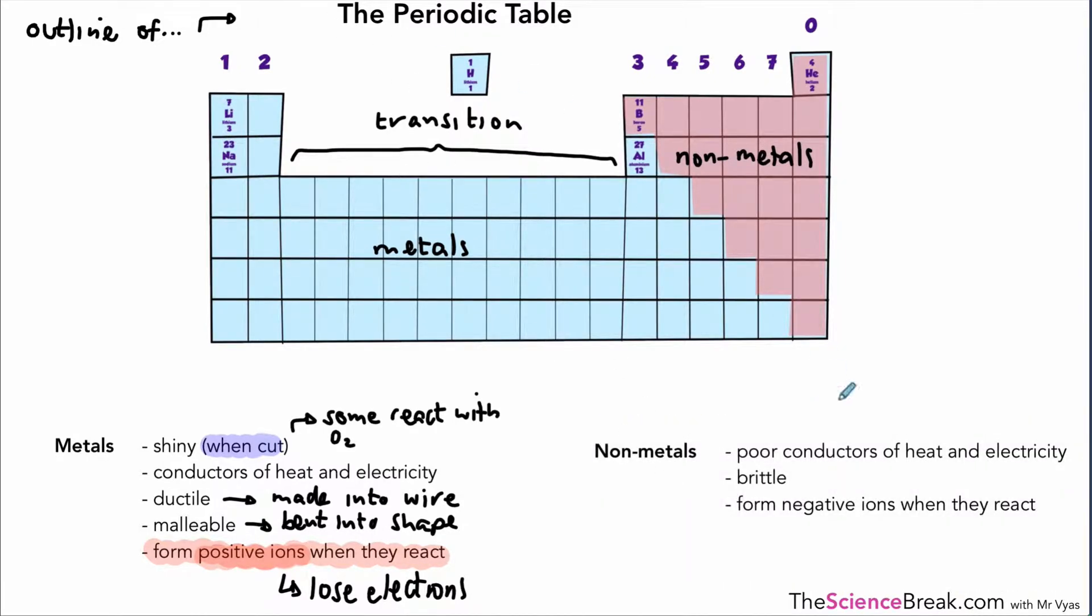In terms of our non-metals, they are poor conductors of heat and electricity. They are often brittle, which means they can crack or break easily. That is, of course, when we're talking about non-metals that are solid elements. They form negative ions when they react. So whereas metals lose electrons to become positive ions, non-metals, if they react, will gain electrons to become negative ions.